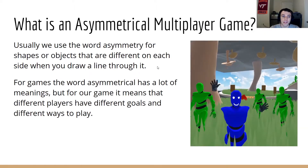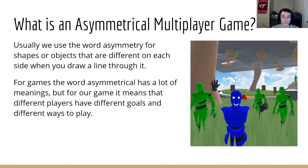What do we mean when we talk about an asymmetrical multiplayer game? Usually we use the word asymmetry to mean shapes or objects that are different on either side whenever you draw a line through it. For games, it means that different players have different goals, roles, and objectives. The largest aspect of asymmetry in our game is that one player is playing in virtual reality, or VR, and the other players are playing on a regular computer screen.